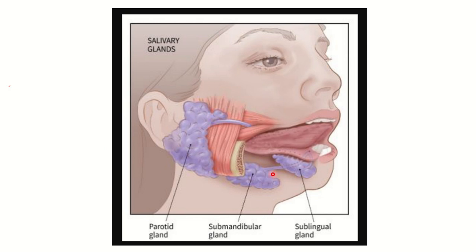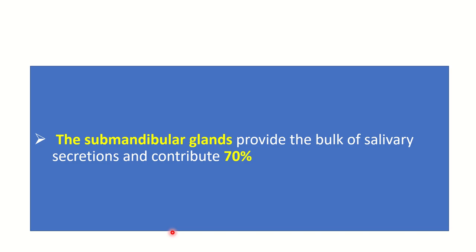First of all, this is the parotid gland. This is the submandibular gland, and this is the sublingual gland. We can see the sublingual gland is relatively small, but the parotid gland and submandibular gland are larger relative to the sublingual gland. So secretion should be more by the parotid or submandibular gland.